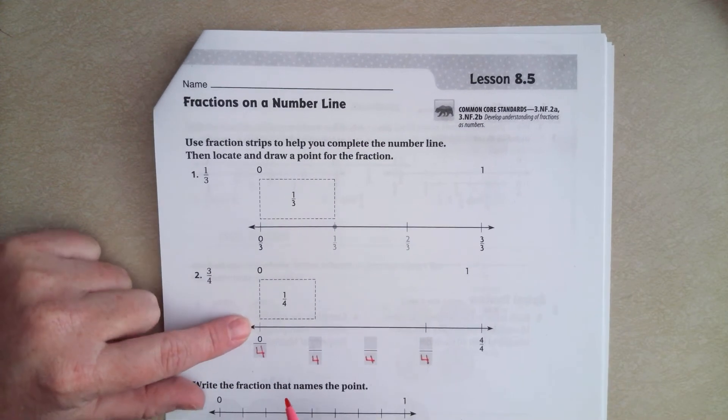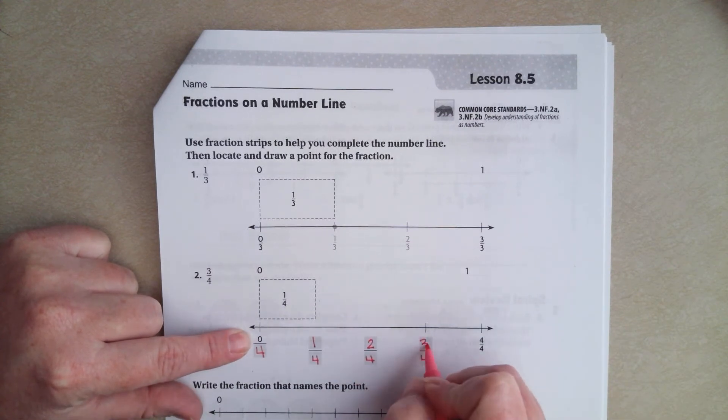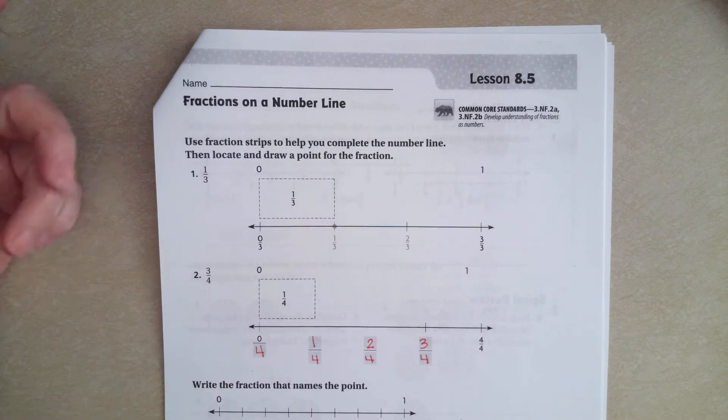So, right here at the very starting line, 0 out of 4. Once we get here, it's 1 out of 4, 2 out of 4, 3 out of 4, and then all 4 out of 4.